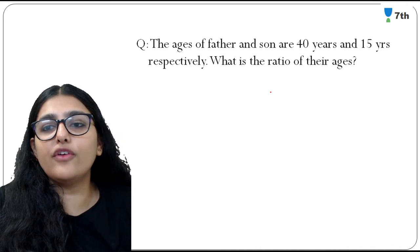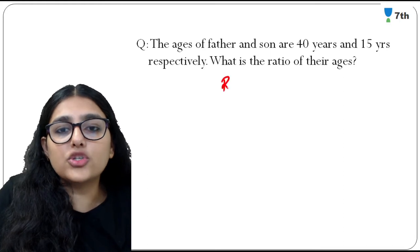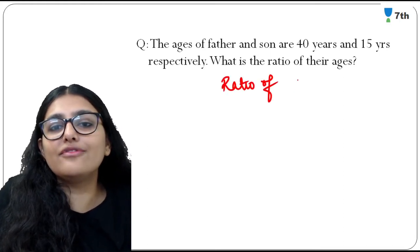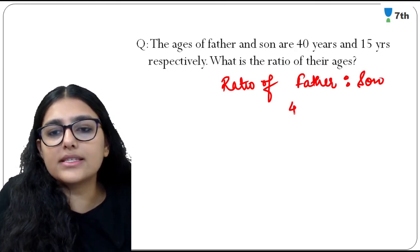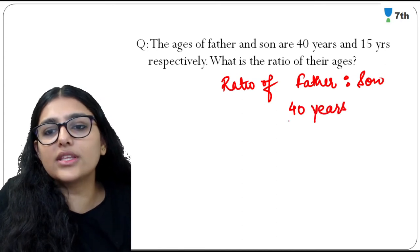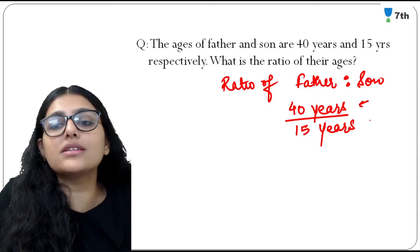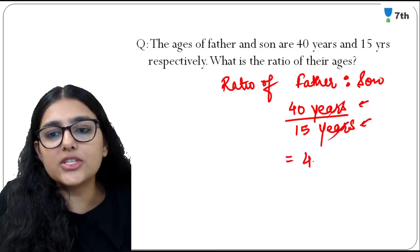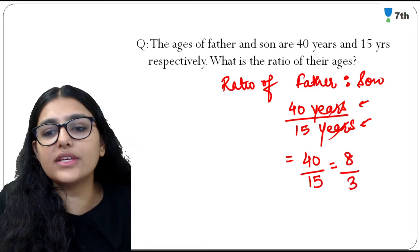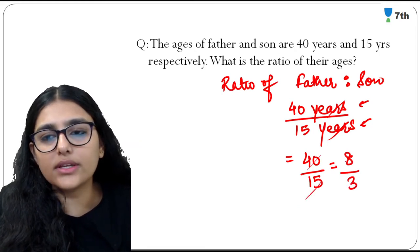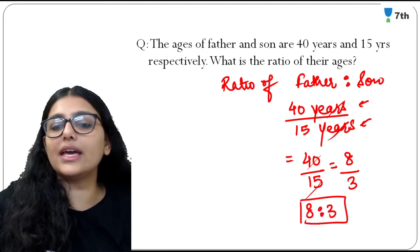The ages of father and son are 40 years and 15 years respectively. What is the ratio of their ages? Father's age goes on top: 40/15. The units — both in years — cancel out. Bringing it to lowest form: 5 eights are 40 and 5 threes are 15, so the common factor 5 cancels. The ratio is 8:3.